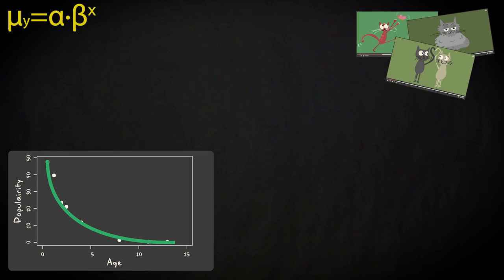This relationship can be modeled using an exponential regression equation, which, at the population level, looks like this: μ equals α times β to the power of x.